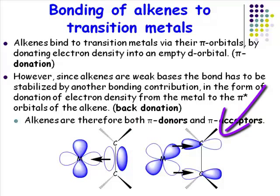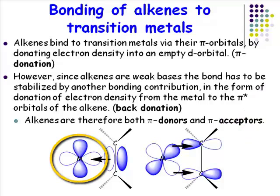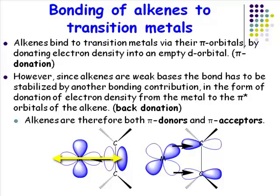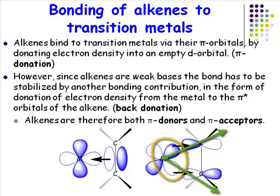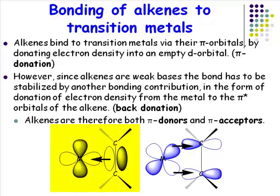We have exactly the same transition metal orbitals we looked at for carbon monoxide and phosphines. We have an unoccupied orbital lying in this plane — the same unoccupied orbital laying in this plane, which in an octahedral environment is one of the E_g set — and an unoccupied orbital lying with this geometry. The bonding gives a donor interaction where this occupied orbital donates into the vacant orbital.